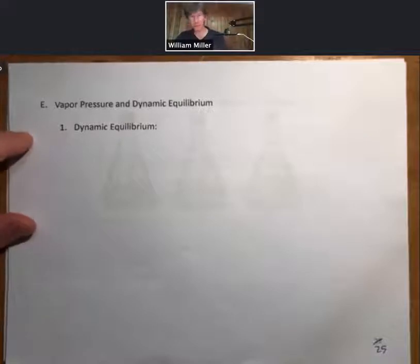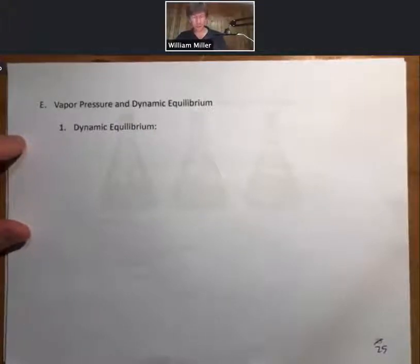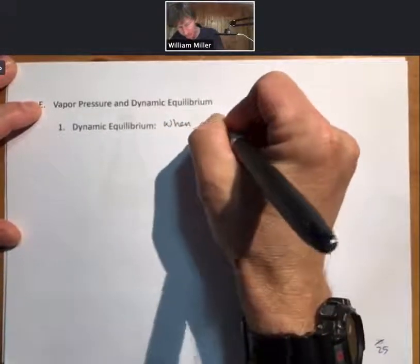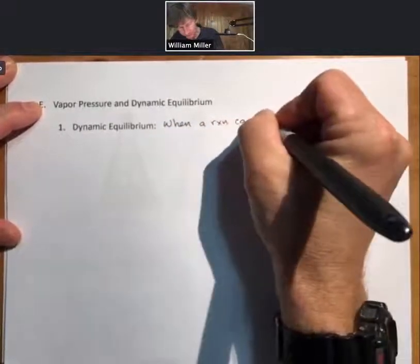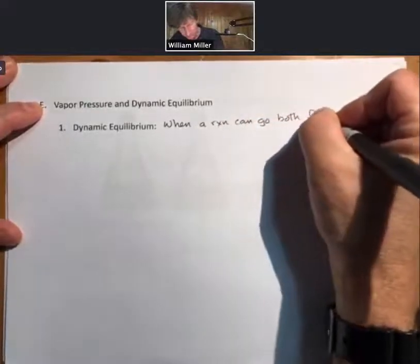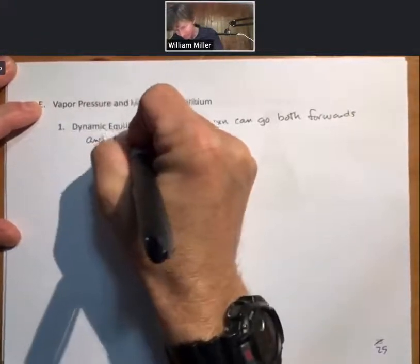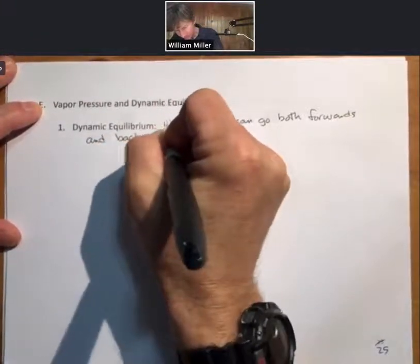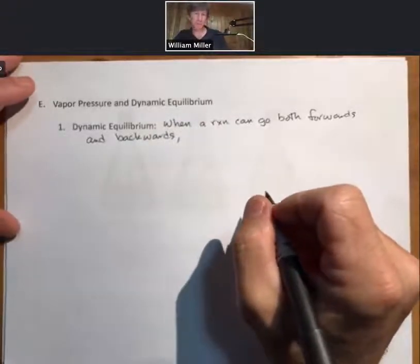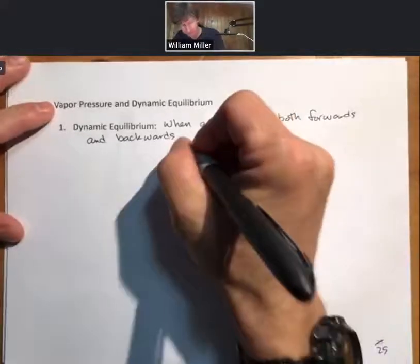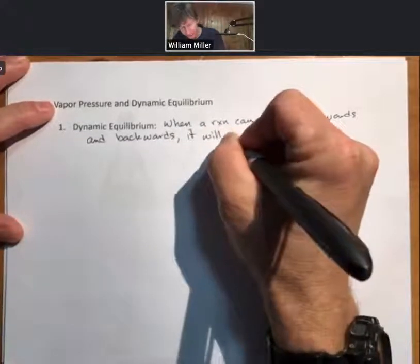Now we're going to take a step farther in our study of vaporization and talk about something called dynamic equilibrium. The first thing we need to know is that when a reaction can go both forwards and backwards, it will establish equilibrium with some amount of reactants and some amount of products.